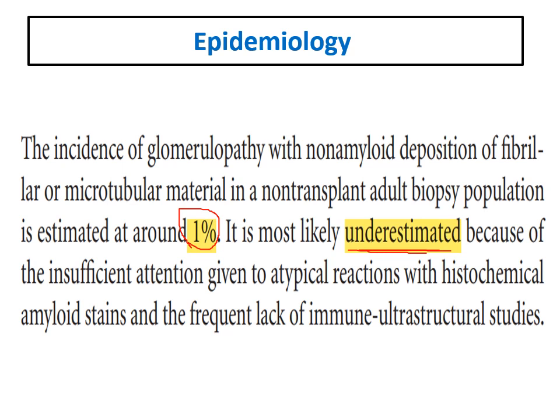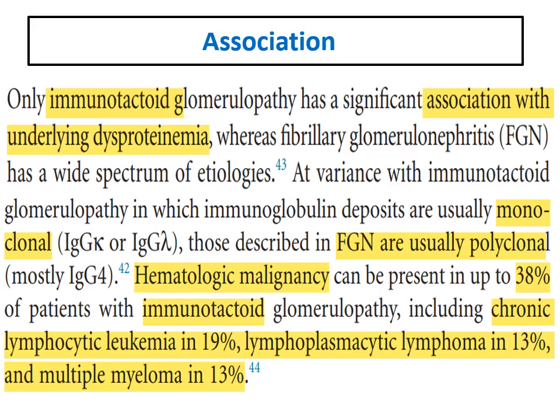We should know when to suspect a diagnosis of fibrillary and immunotactoid — this is the most important point. When you suspect a patient to have fibrillary and immunotactoid, you can order electron microscopy, which will confirm the diagnosis.